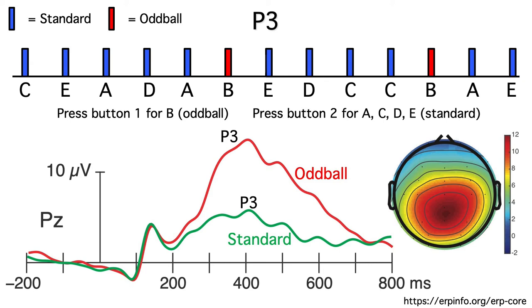In general, the amplitude of the P3 is inversely related to the probability of the stimulus. If we use probabilities of 10% and 90%, rather than 20% and 80%, we'd get an even bigger P3 for the oddballs and an even smaller P3 for the standards.